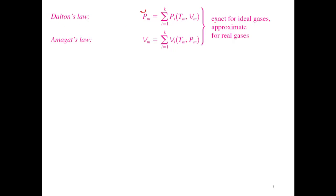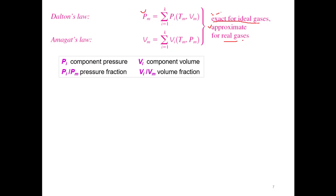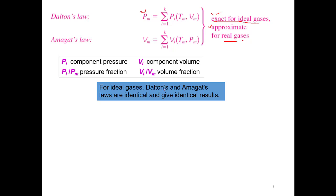These two laws are very accurate for ideal gases — they give exact results. However, for real gases they give approximate results. We also define pressure fraction as the ratio of individual component pressure to mixture pressure, and volume fraction as the ratio of individual component volume to mixture volume. For ideal gases, Dalton's and Amagat's laws are identical and give the same results.